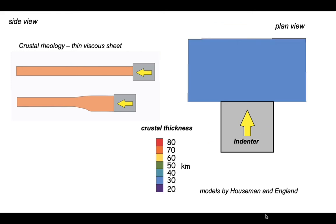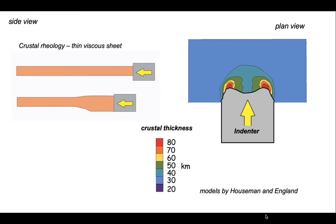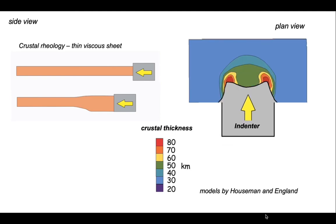Their results are shown here. The deformation is seen in plan view, and we can chart the strain by tracking crustal thickness as the indenter drives into what is initially just 30 km thick crust. The crust gets a bit thicker and the deformation migrates out. We end up with thicker crust and the deformation has migrated into the previously undeformed material, creating a wider area of thickened crust.